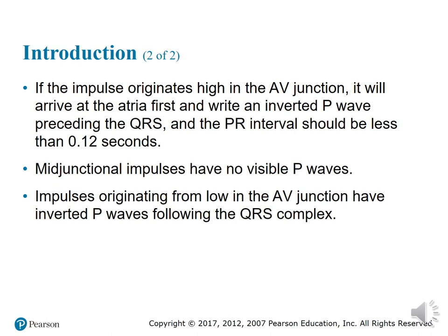If an impulse originates in the high AV junction, close to the atrium, it will arrive at the atrium first and produce an inverted or upside-down P wave. The P wave is inverted because the impulse is going in a backward direction to meet the atrium. Then the forward impulse reaches the ventricles and writes the QRS.